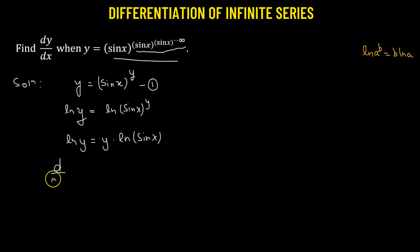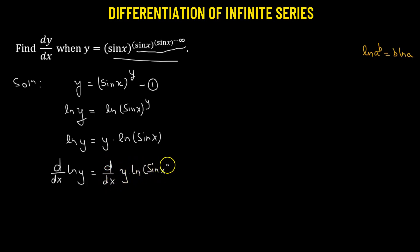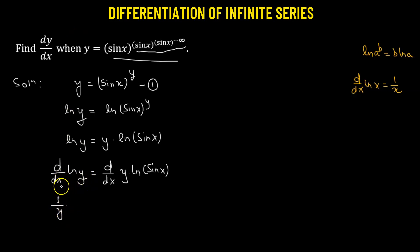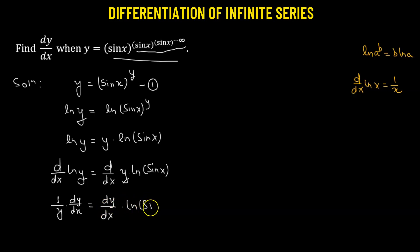We'll now take the derivative on both sides with respect to x. The derivative of log(y) equals the derivative of y times log(sin x). We know that d/dx of log(x) is simply 1 over x, so the derivative of log(y) is 1 over y. Since we have y instead of x, we apply the chain rule and multiply by dy/dx. For the right-hand side, we use the product rule: dy/dx times log(sin x) plus y times d/dx of log(sin x).